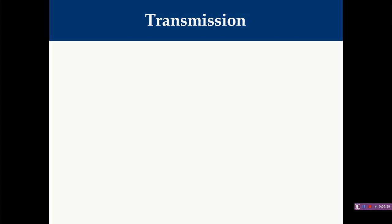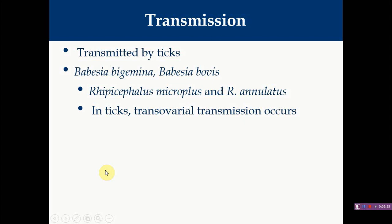Babesia organisms are transmitted by ticks. Babesia bigemina is transmitted by Rhipicephalus ticks. An important feature is trans-ovarian transmission: the organism infects the tick's ovaries, and when the female lays eggs, the eggs already contain the infection. So developing ticks have infection inside their body and are responsible for disease transmission. This differs from Theileria, where trans-stadial transmission occurs - only one stage is infected during development and the next stage transmits the disease.